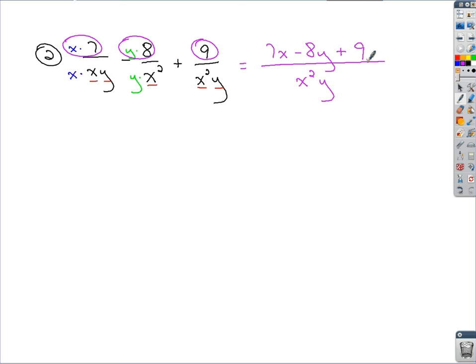It would be minus the 8y and then plus 9, at which point everything is put together as one fraction. You could consider trying to factor it further to cancel things out, but that's not possible. So that's as good as we can do.